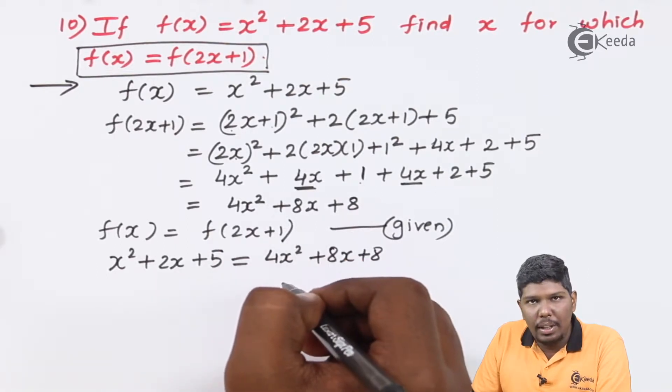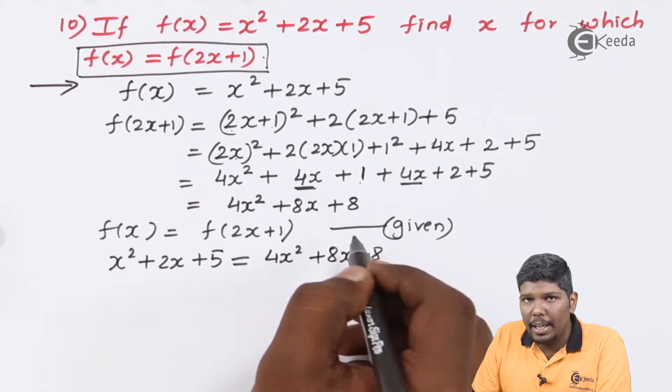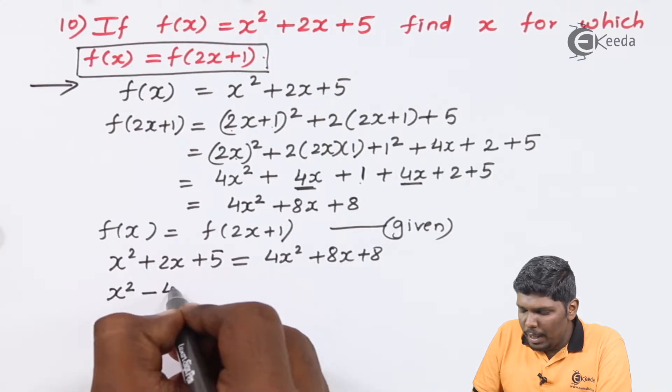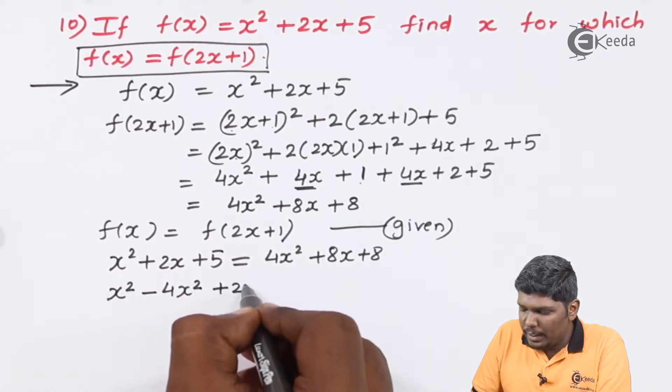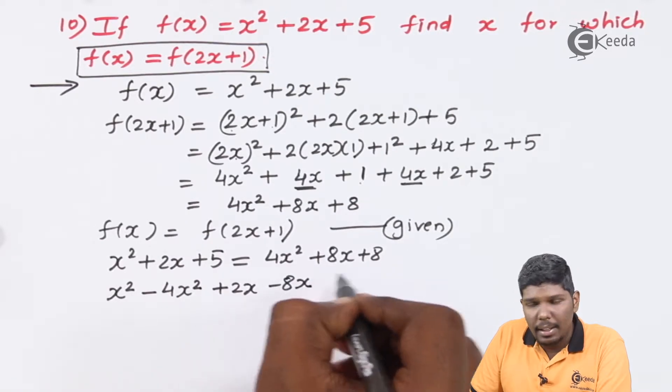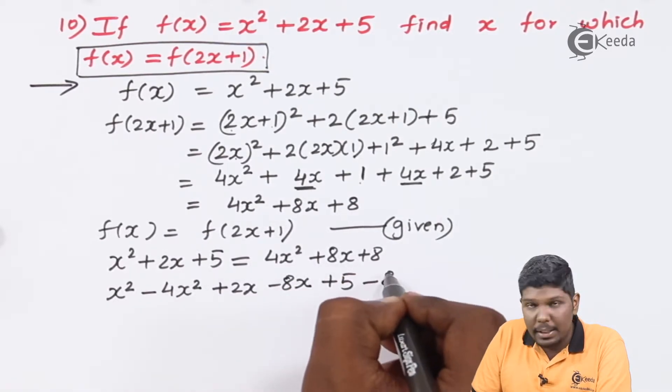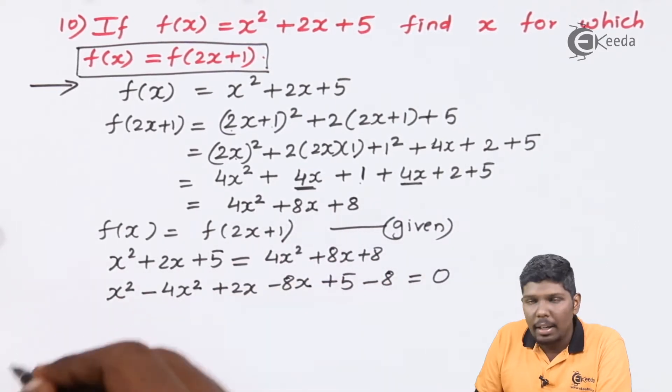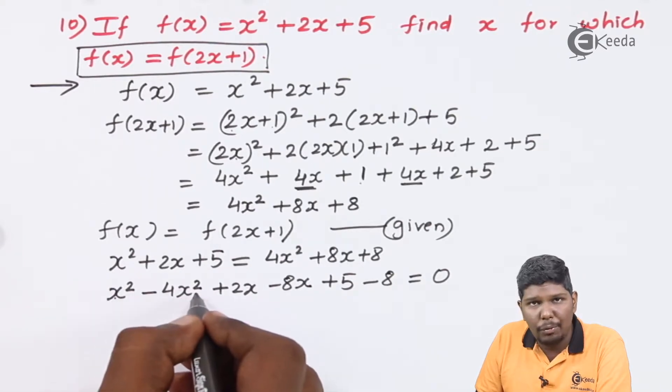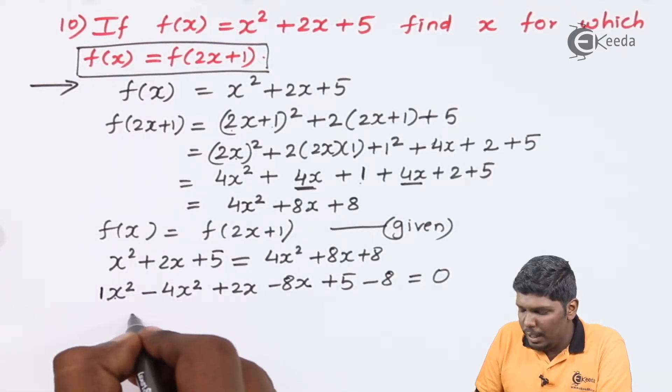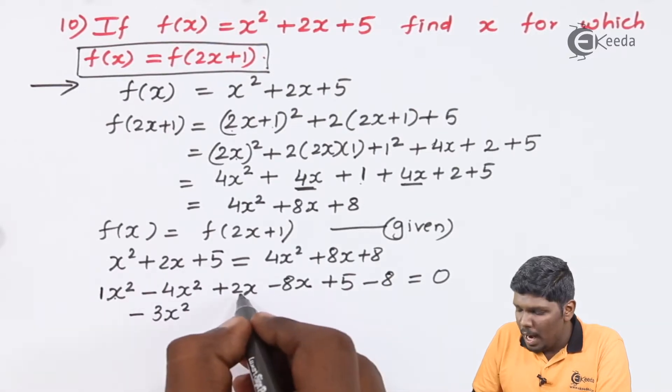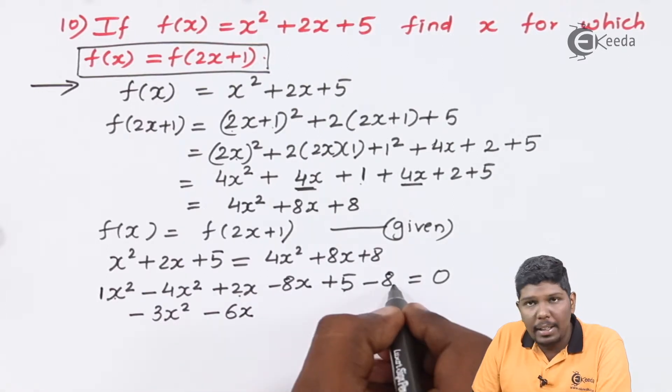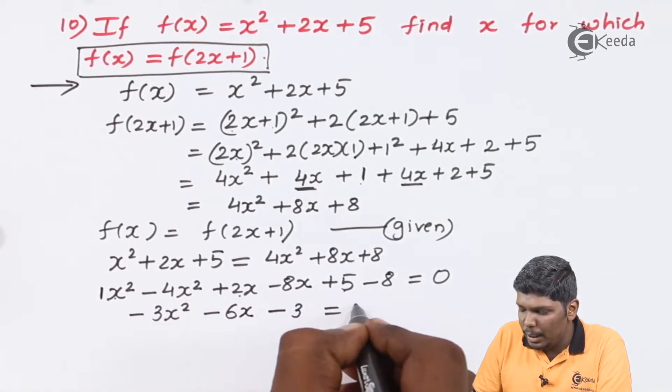Now to further solve this equation we are going to take the like terms on the same side. So here we have x² positive, 4x² will become -4x², plus 2x, 8x will become -8x, plus 5, and +8 will become -8. So we have taken all these terms to the left hand side. So here there is nothing except 0. So x² - 4x² = -3x², 2 - 8 = -6x, and 5 - 8 = -3, equal to 0.